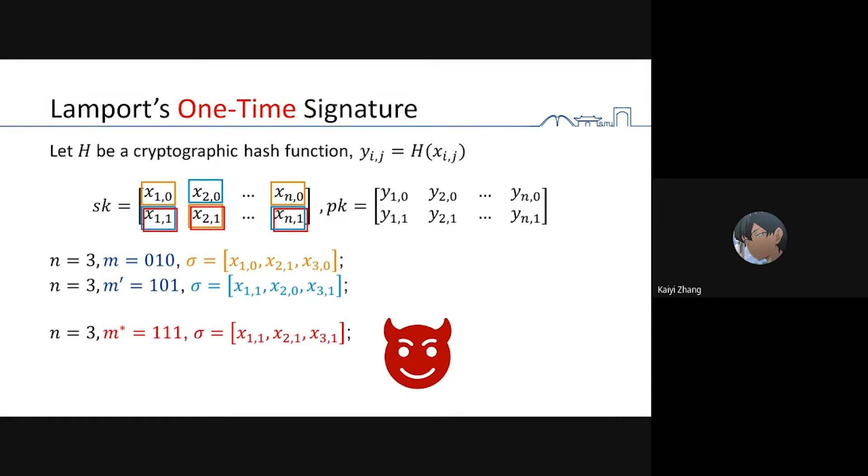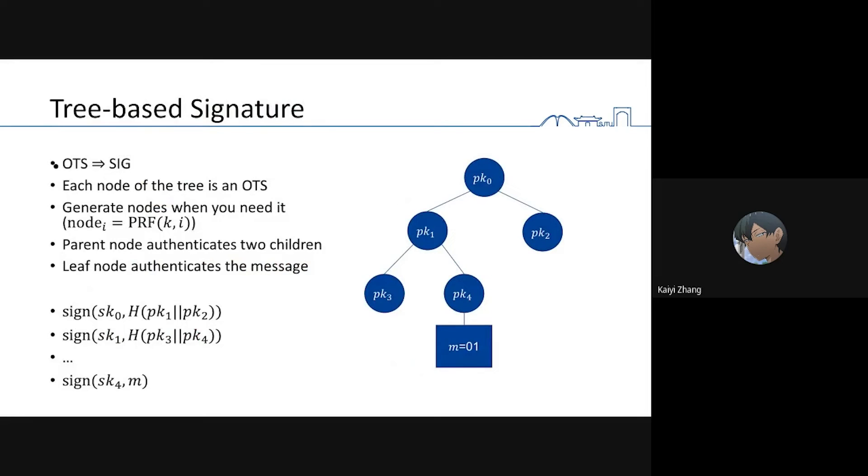Suppose the signer signs another message 1, 0, 1. Then the adversary can forge a signature to the message 1, 1, 1. Actually, in this case, the adversary can forge any signature to any message because the adversary knows all the secret key.